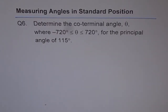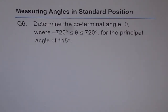Measuring angles in standard position. Question 6: Determine the co-terminal angle theta where theta is between minus 720 degrees and plus 720 degrees for the principal angle of 115 degrees.